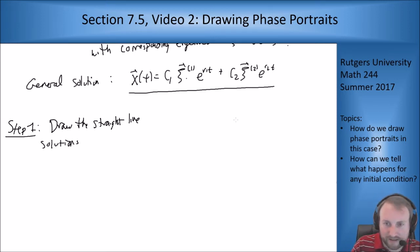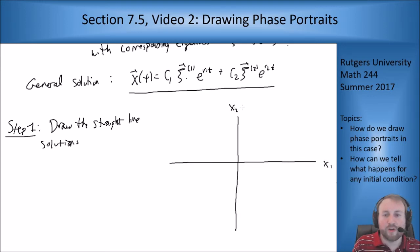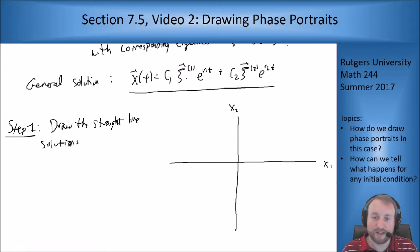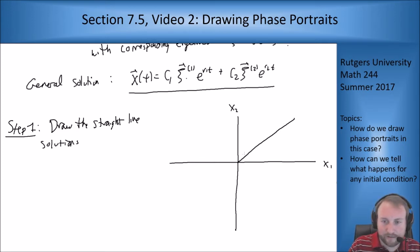Let me draw my axes here — x₁ and x₂. Now I don't actually know what ξ₁ and ξ₂ are because I haven't given them numbers, but I can just pick them to be something and draw the picture based on that, and show you how to do it in specific examples in the next video. I know the straight line solutions go in the directions of ξ₁ and ξ₂, so let's say ξ₁ goes this way and ξ₂ goes up this way.